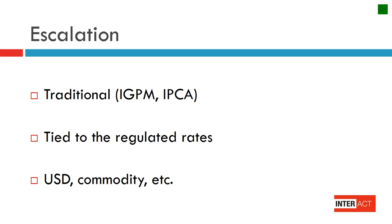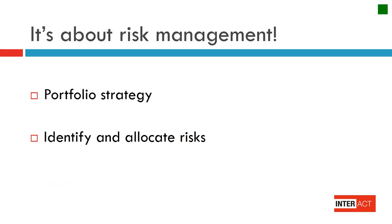The escalation formulas may include the following options: traditional inflationary indices like IGPM or IPCA, which are basically tied to official inflation; or they may be tied to regulated rates, to the US dollar, or to another commodity. This basically depends on what is negotiated between seller and buyer.